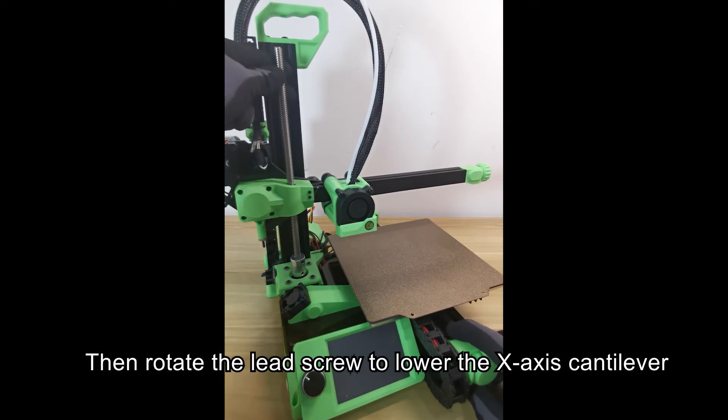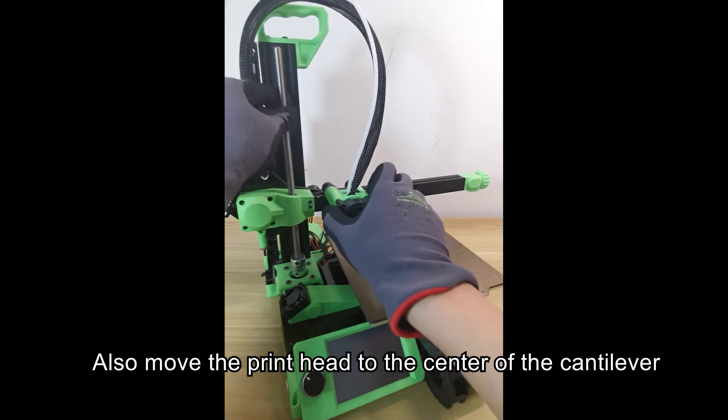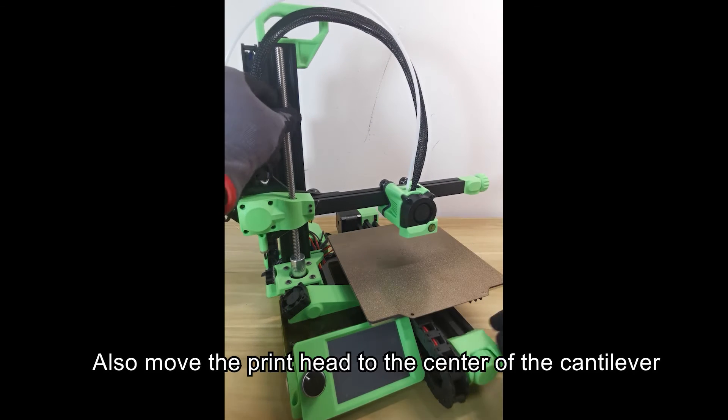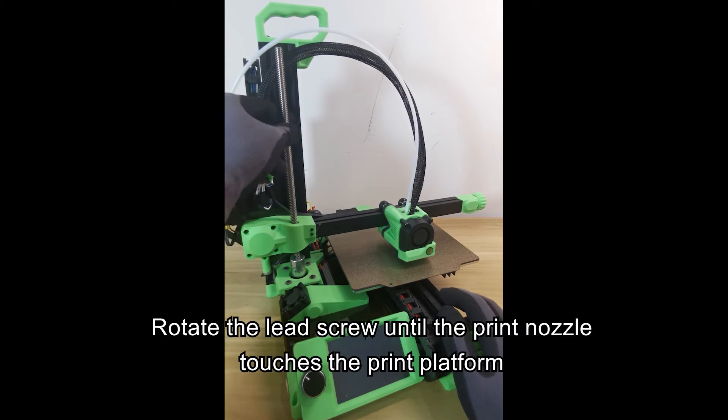Then rotate the lead screw to lower the X-axis cantilever. Also move the print head to the center of the cantilever. Rotate the lead screw until the print nozzle touches the print platform.